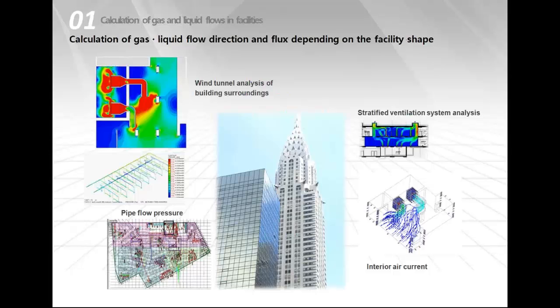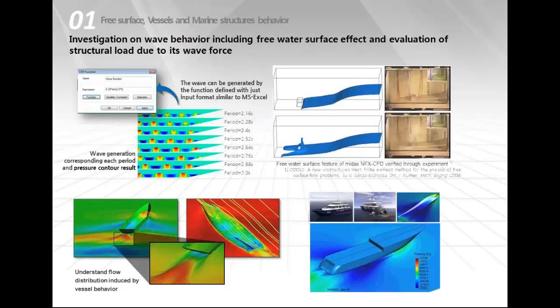CFD can also be used to check flow or liquid direction and flux in a facility or building - for example, a parking lot where you want to know if fans are correctly exhausting the air inside. CFD is also used a lot in marine equipment to know wave behavior, using the free water surface feature, which simulates the interface between air and liquid - useful for waves and sloshing.